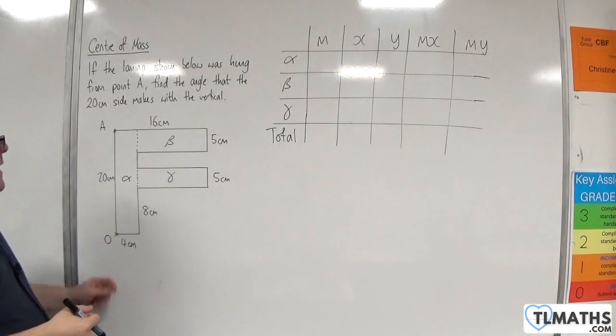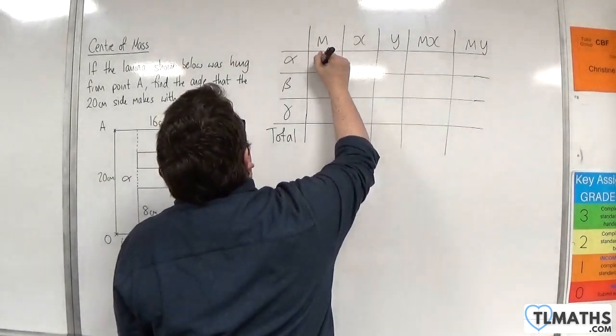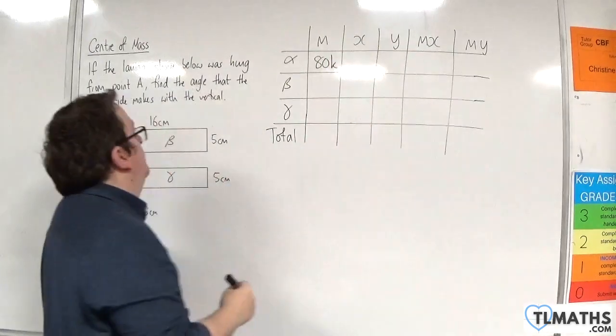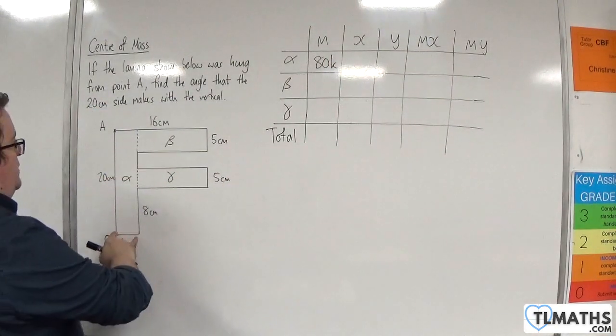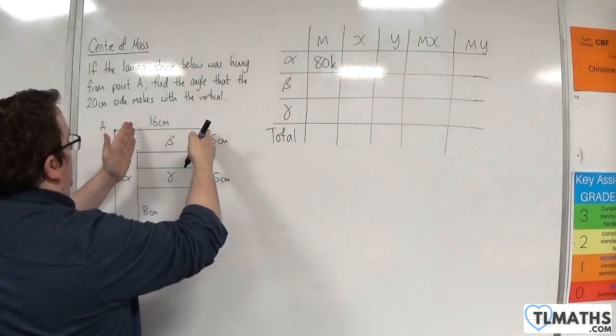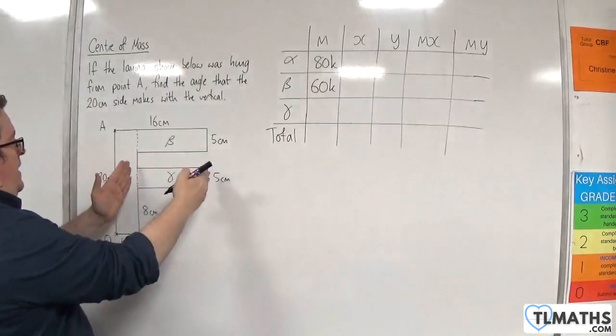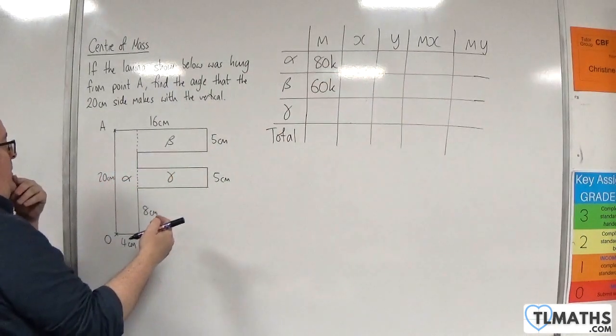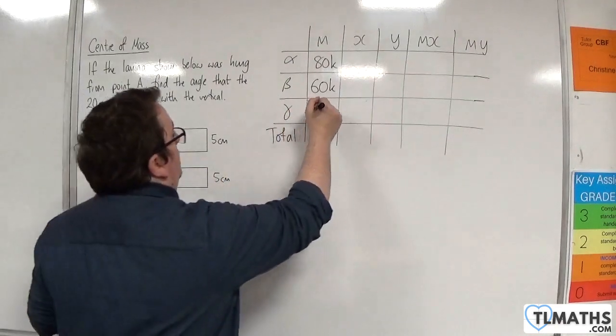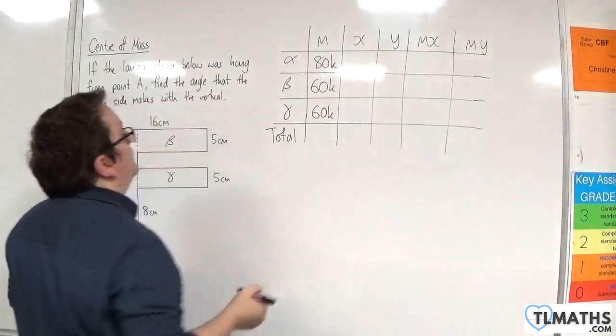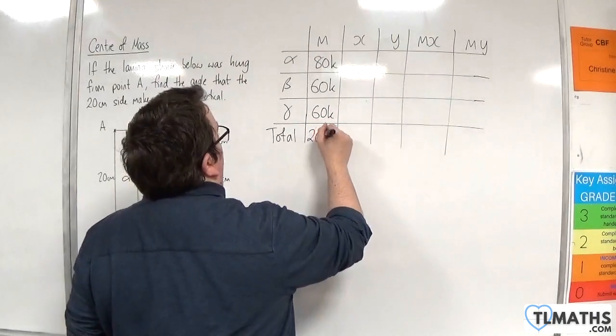So for alpha, we've got 4 times 20, so that will be 80k. Then for beta, now that distance is 4, so this is 12 times 5, and so that's going to be 60k. And that has the same dimensions, so that's going to be 60k as well. So the total is going to be 200k.